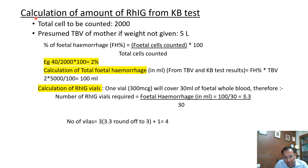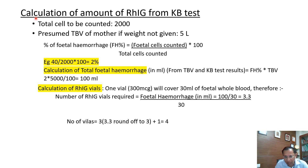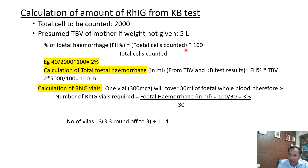Now for the main part — calculating the amount of RhIg from the KB test. After KB staining, count 2000 cells under the microscope and note the number of fetal cells. Also calculate the total blood volume of the mother; if weight is not available, presume it as 5 litres. First, calculate the percentage of fetal haemorrhage: total fetal cells counted divided by total cells counted, multiplied by 100.